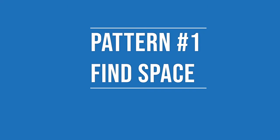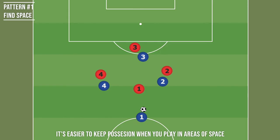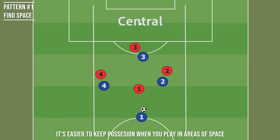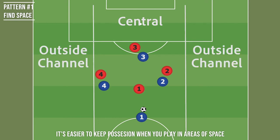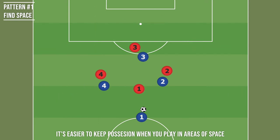Now we're going to check out some common patterns of play and see how space and pressure figure into the flow of the game. We'll throw together a simple 4v4 setup on this half field. The blue team has the ball. Where is the pressure? We have a lot of pressure in this central area, and we see that the outside channels are mostly, if not all, open space. If the blue team tries to connect passes here in the middle, they have very little space, therefore very little time, and it's going to be challenging to make and receive quality passes.